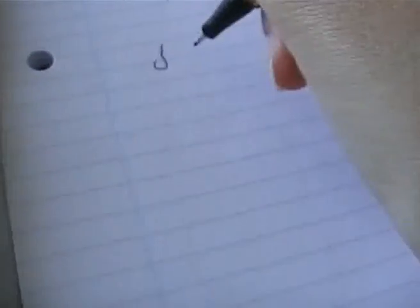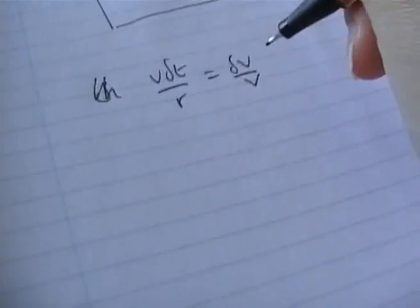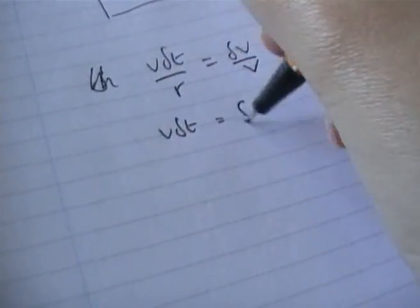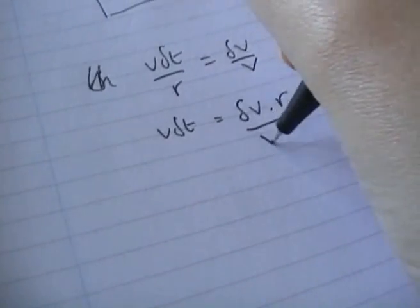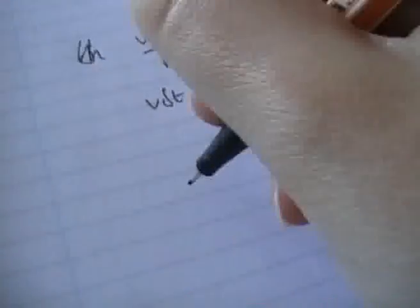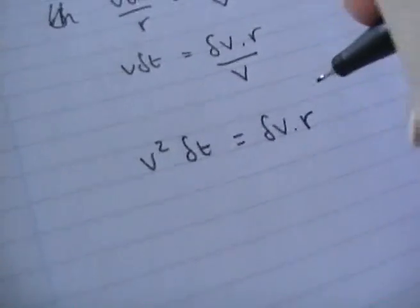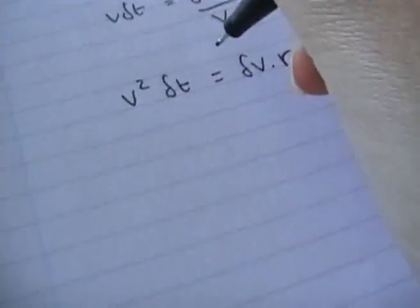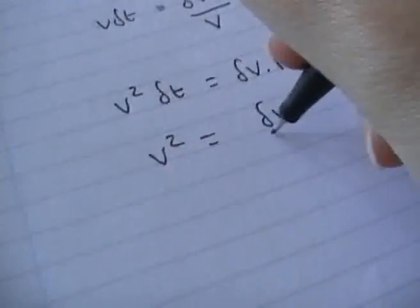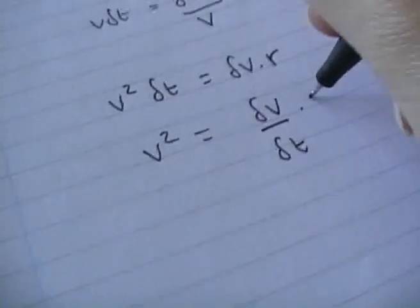So now we have v delta t over r equals delta v over v. Now let's multiply through by r. So we have v delta t equals delta v times r over v. And now let's multiply through by this v. So now we have v squared delta t equals delta v times r. And now let's divide through by delta t. So we now have v squared equals delta v over delta t times r. And now let's divide through by r. And we end up with v squared over r equals delta v over delta t.